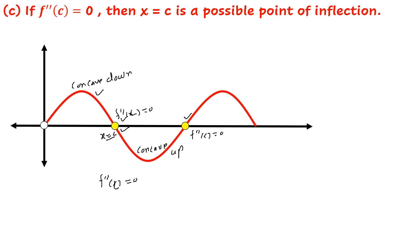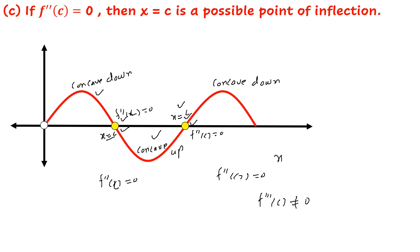So when f''(c) = 0, the curve may have a point of inflection. Considering the second yellow ball at x = c, before this point the curve is concave up and after it the curve is concave down, so this point is also a point of inflection. We conclude that we may get a possible point of inflection when f''(c) = 0. Furthermore, if f'''(c) ≠ 0, then x = c is certainly a point of inflection on the curve.